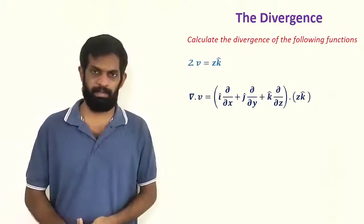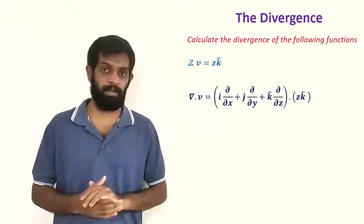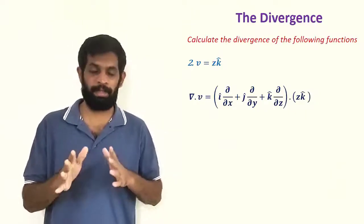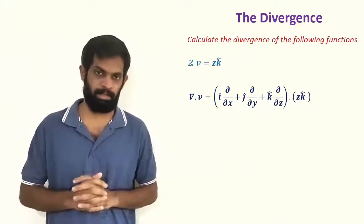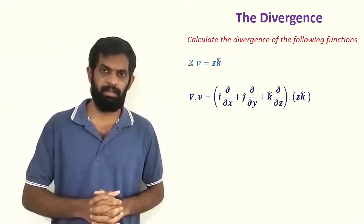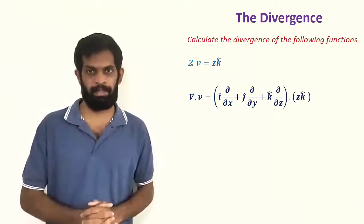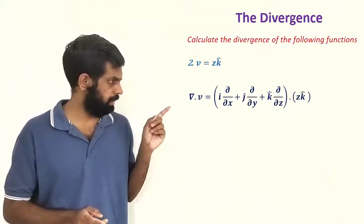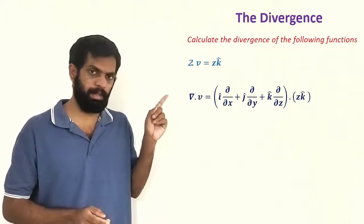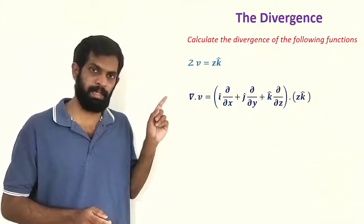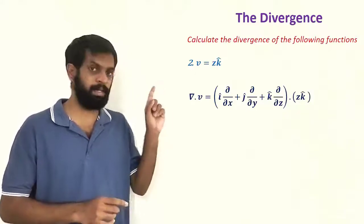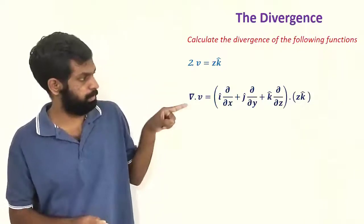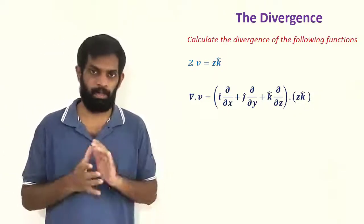The second question is given here. Vector function V equal to z k-cap — there is no i-cap or j-cap component, only the z k-cap direction with magnitude z. So what is del dot V? Del dot V equals i-cap ∂/∂x plus j-cap ∂/∂y plus k-cap ∂/∂z, dotted with z k-cap. Since i-cap and j-cap components don't appear in V, those terms are zero.